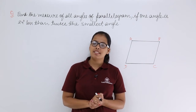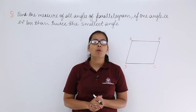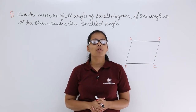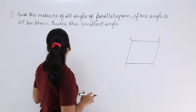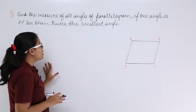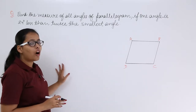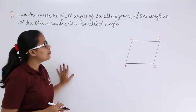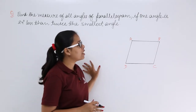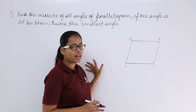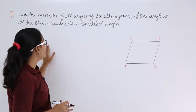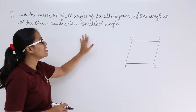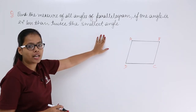Let's discuss this problem: find the measure of all angles of a parallelogram if one angle is 24 degrees less than twice the smallest angle.